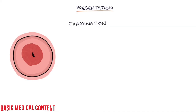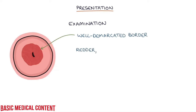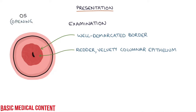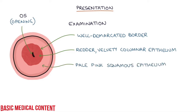Examination of the cervix will reveal a well-demarcated border between the redder, velvety columnar epithelium that extends from the endocervix through the os, or the opening of the cervix, and the pale pink squamous epithelium of the ectocervix, which covers the rest of the cervix. This border is the transformation zone.